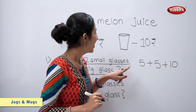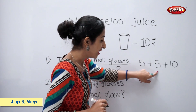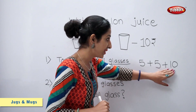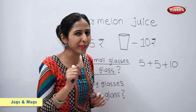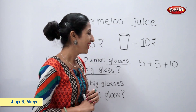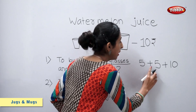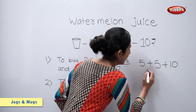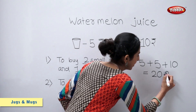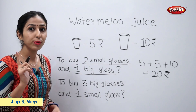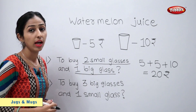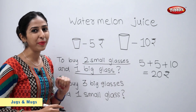Let's solve. 5 plus 5 is equal to 10. And 10 plus 10 is equal to? You tell me. Right — 20. So, 5 plus 5 plus 10 is equal to 20 rupees. So, to buy 2 small glasses and 1 big glass, you will have to pay 20 rupees.